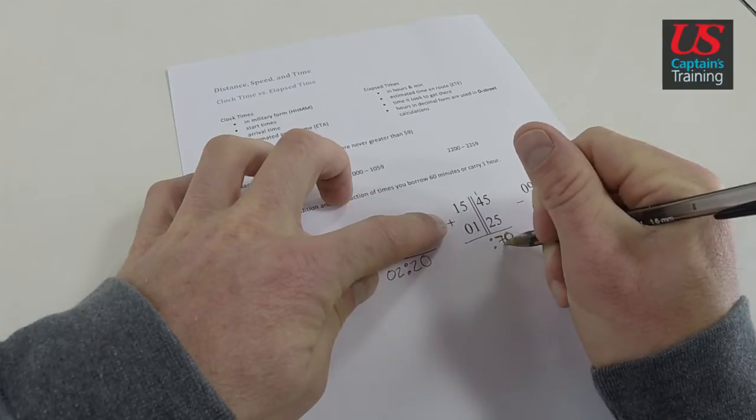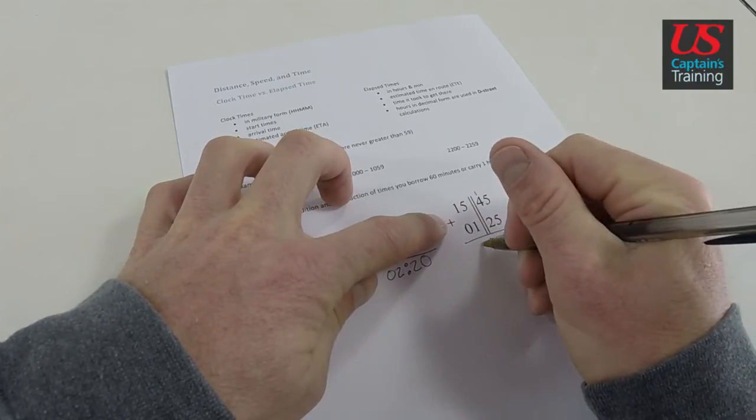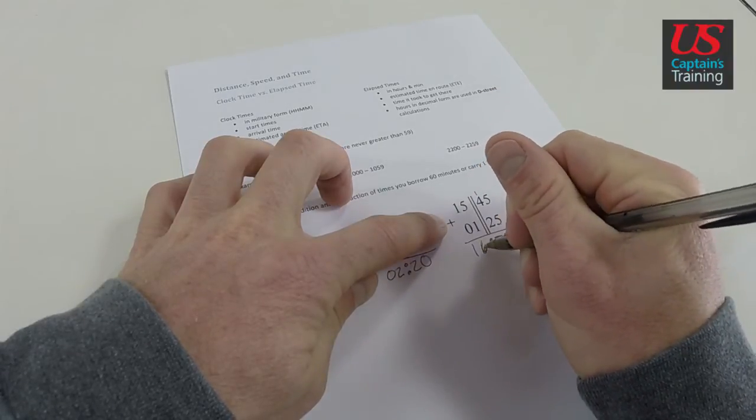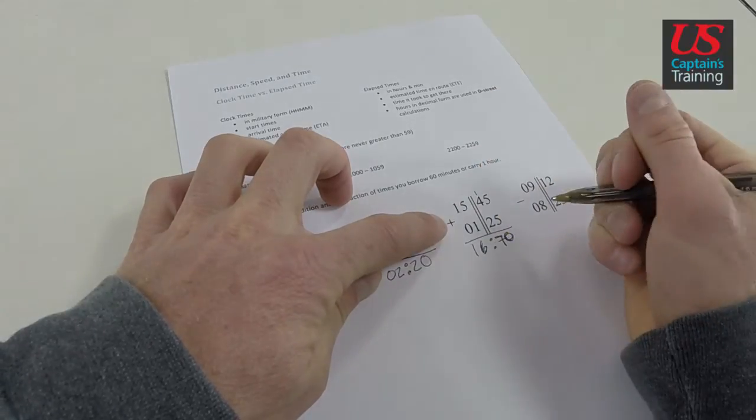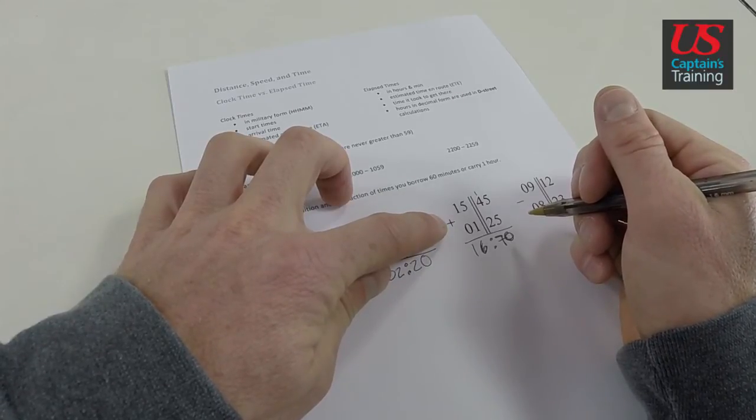So we will talk about that in a second. Let's add the hours. 5 plus 1 is 6. 1 plus 0 is 0. So 16 hours and 70 minutes. How many minutes in an hour? There are 60 minutes in one hour.